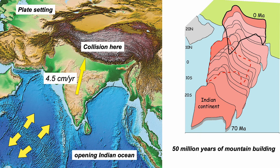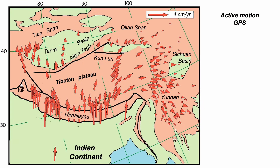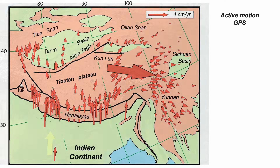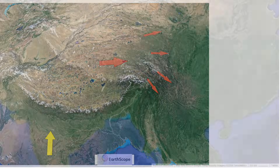Now, we might expect, because of this continuing convergence, that the crust is being pushed together in the areas of southern Tibet. But actually, it's more interesting than that. GPS readings show that the active motion across this area is doing this — the Tibetan Plateau is being pushed northwards and squirted out to the east. And it's within this context that the earthquakes in Tibet are forming.